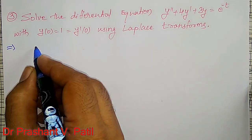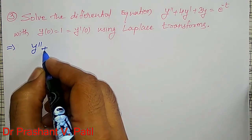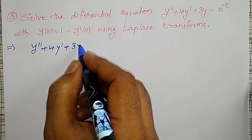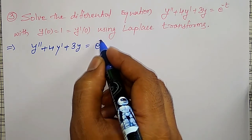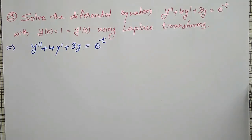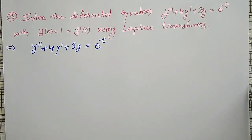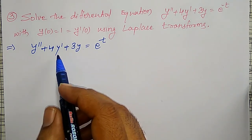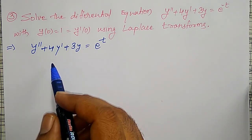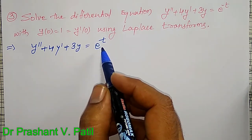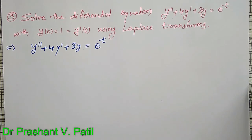The given differential equation is y double dash plus 4y dash plus 3y equal to e to the power minus t. This one we can solve using our analytical method also, by substituting derivative by capital D and then auxiliary equation and then CF and then PI and all those things. But instead, using Laplace Transforms, how to solve — we are going to discuss here.